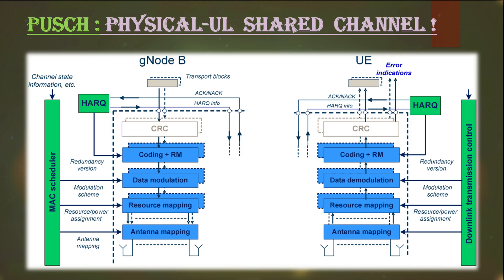In PUSCH, user data or transport blocks are received at the lower layers at the gNodeB physical layer — starting from antenna mapping, then resource mapping, modulation schemes, coding, rate matching, then CRC checks and HARQ indicators.